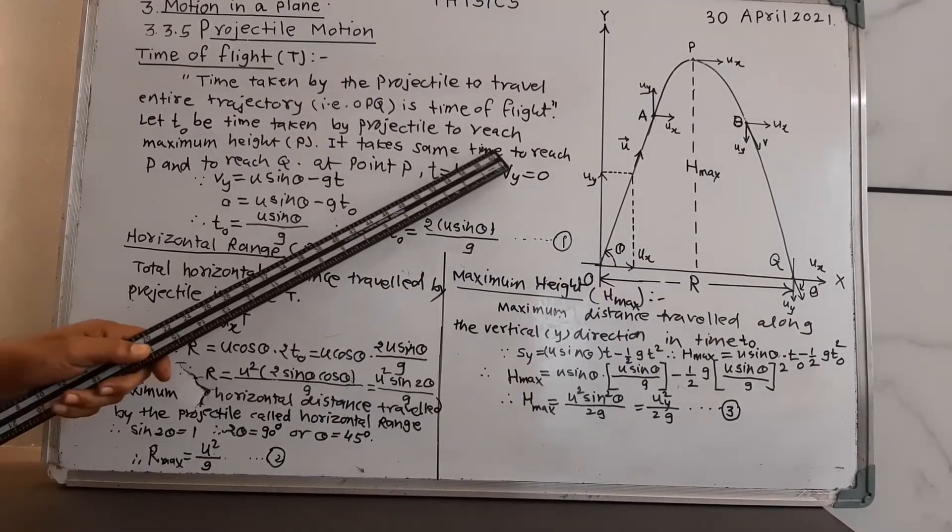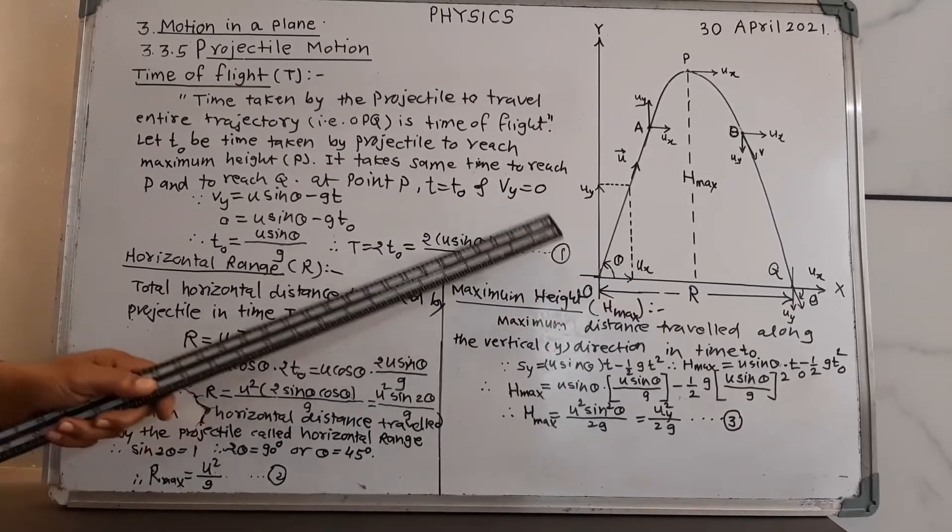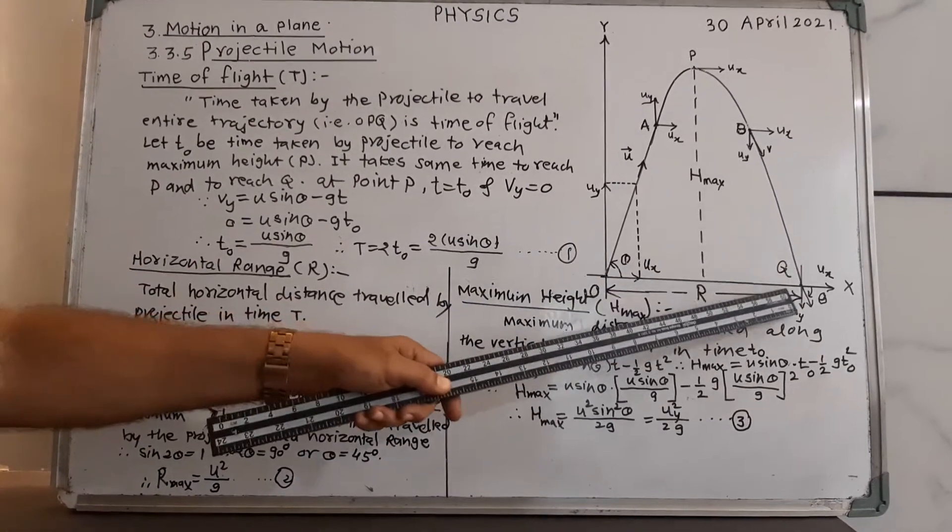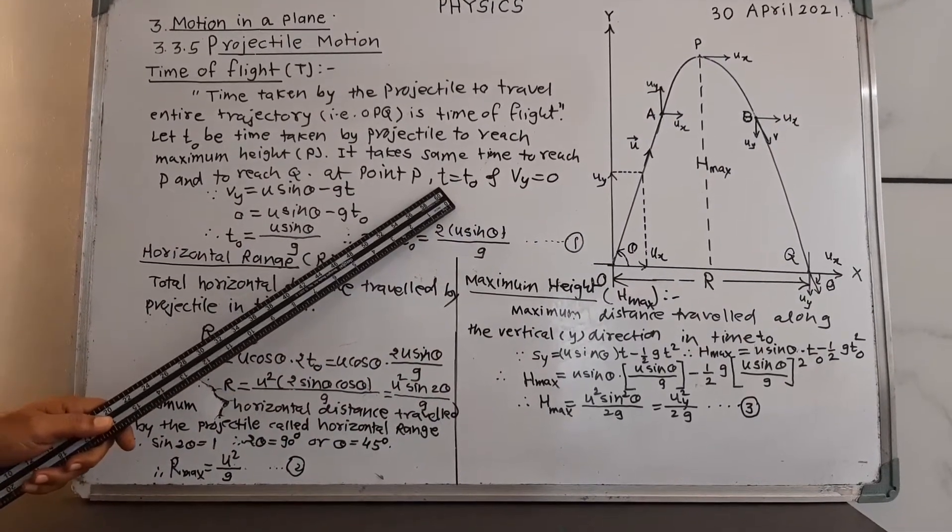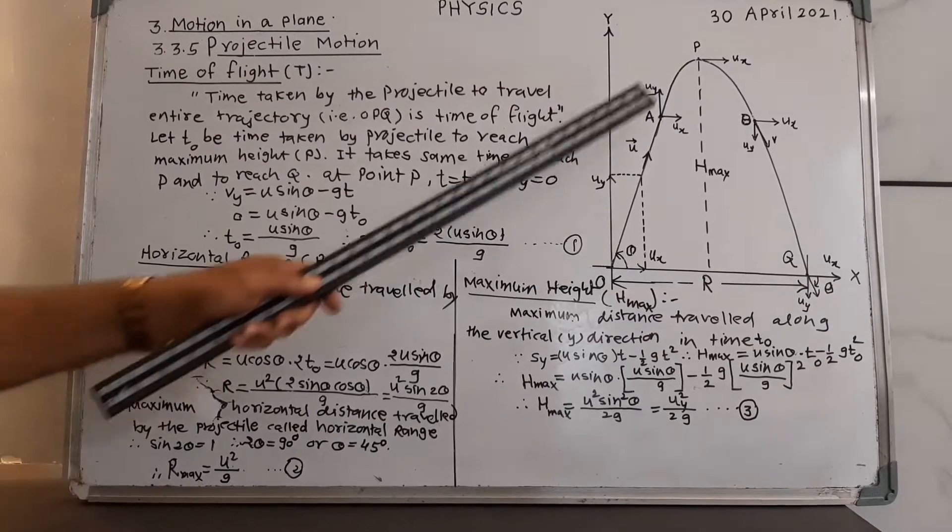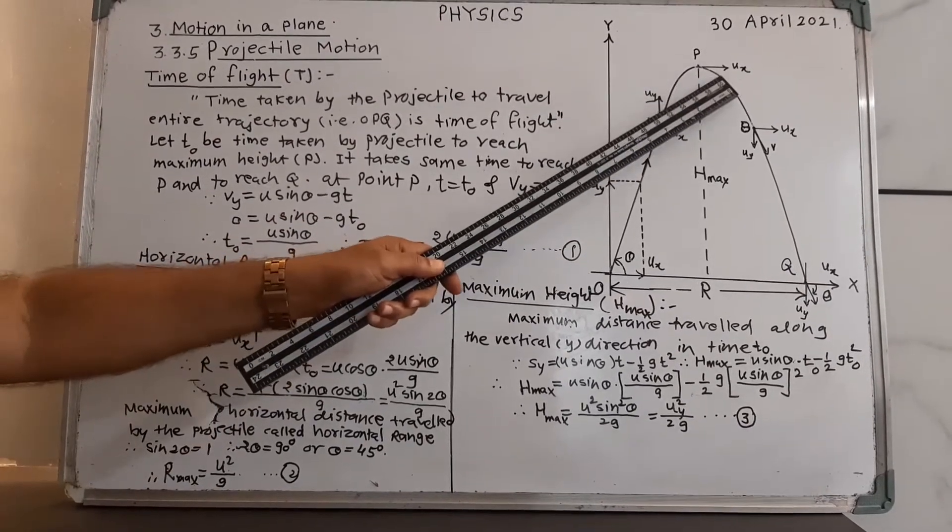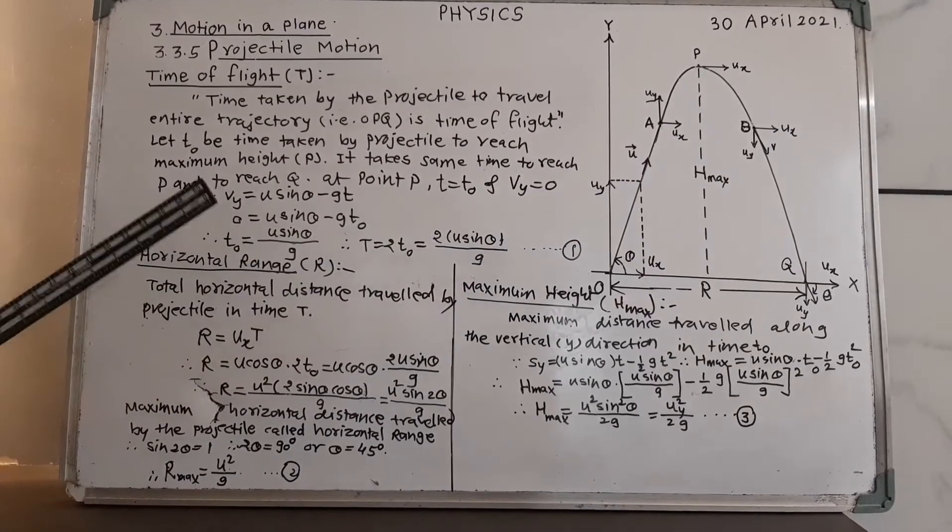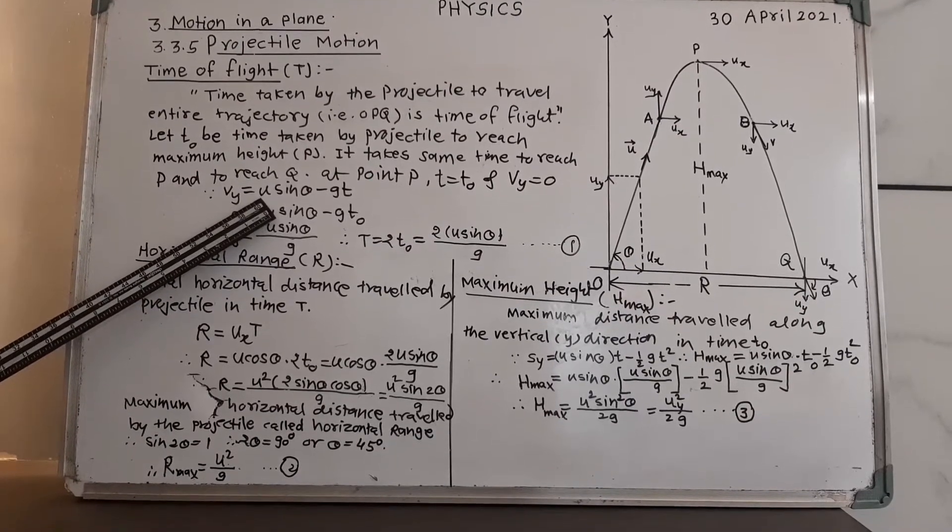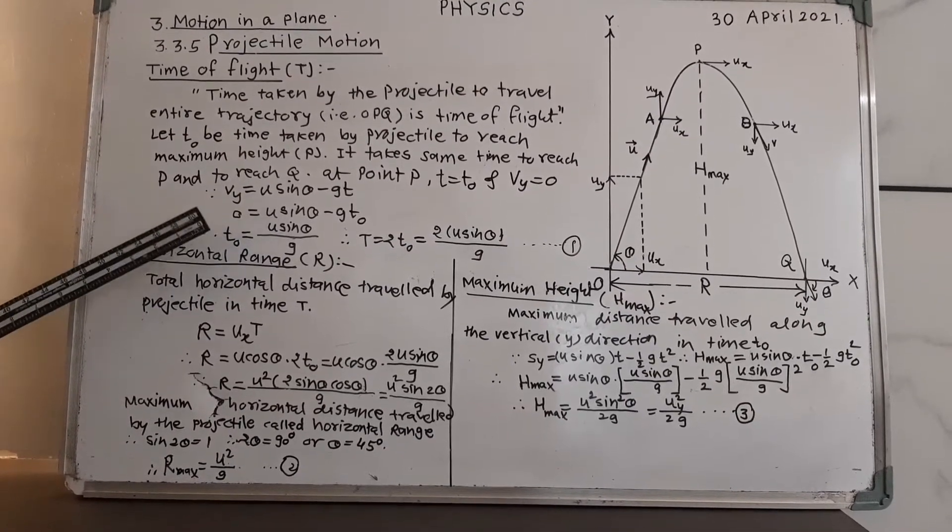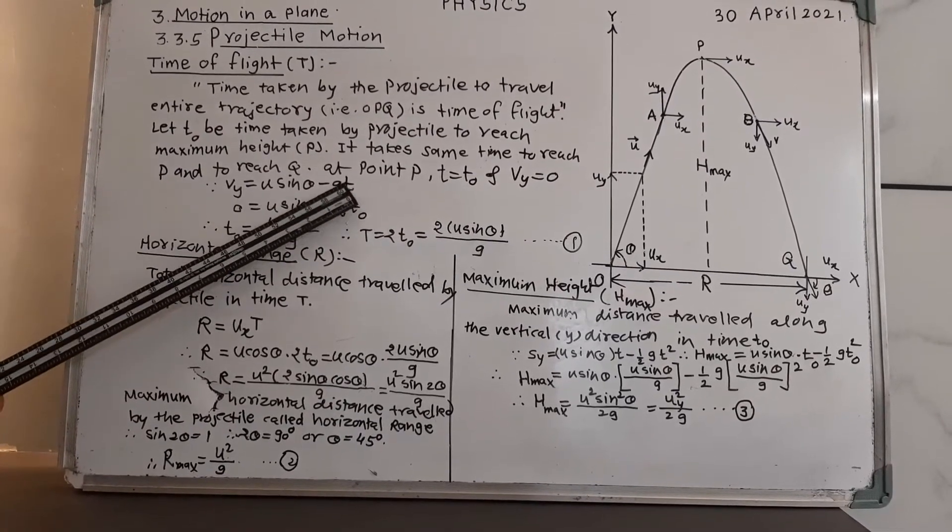It takes the same time to reach point P from O and to reach point Q from P. At point P, the conditions are T equal to T0 at the highest point and Vy equal to 0. Only Vx is the active component and therefore, Vy will be U sin theta minus GT.